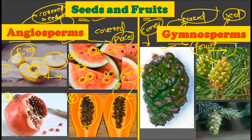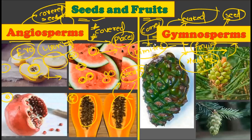This is the very basic reason why gymnosperms have a very limited habitat. Angiosperms have seeds covered in fruits, while gymnosperms have naked seeds.